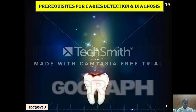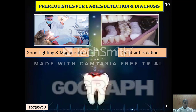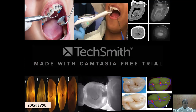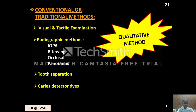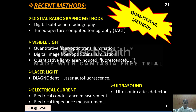There are certain prerequisites for caries detection and diagnosis, which include good lighting and magnification, quadrant isolation, and thorough drying by gentle blast of air, which is useful in detection of white spot lesions. Most of the conventional methods were qualitative in nature, including visual and tactile examination, radiographic methods, tooth separations and caries detector dyes. Whereas most of the recent methods are quantitative, such as digital radiographic methods, use of visible light, laser light, electrical current and ultrasound.